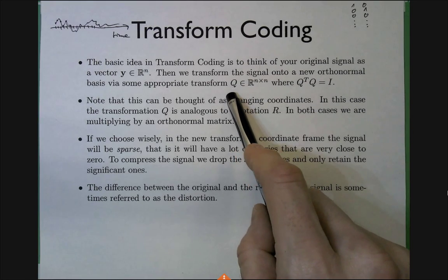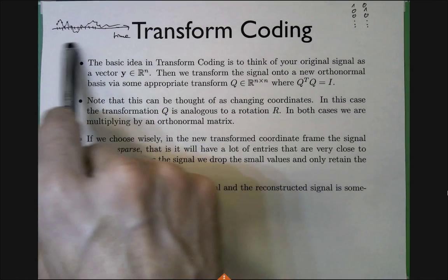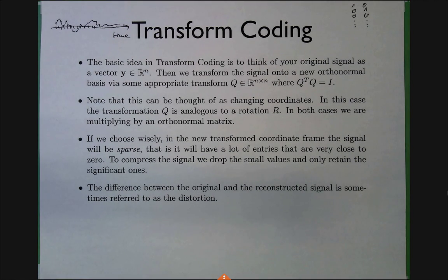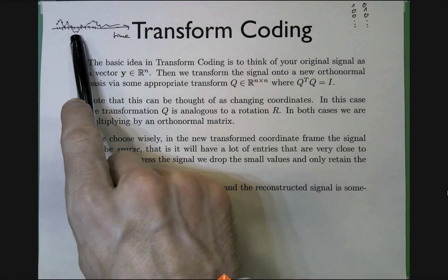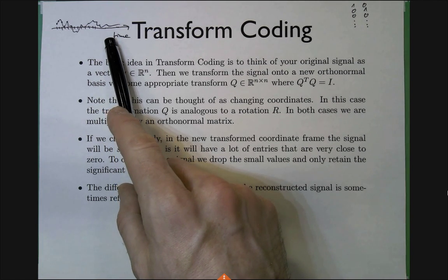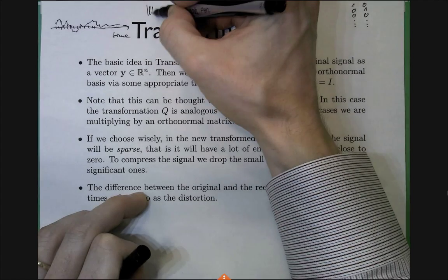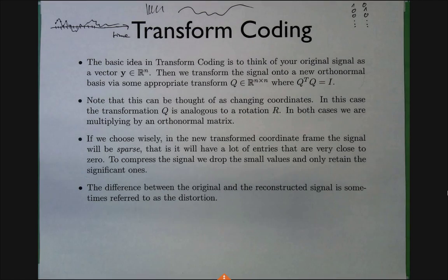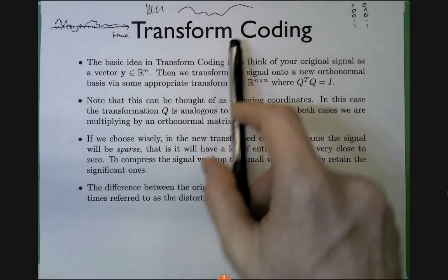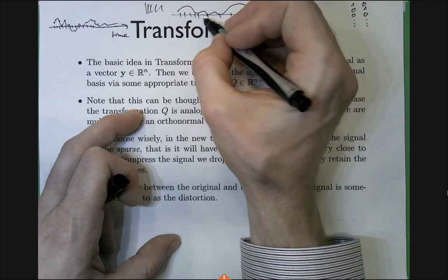The idea of transform coding is how to use the theory of orthogonal matrices to create a really cool lossy compression scheme. If you think about it intuitively: some input signal might be complicated but it's not completely random — something like speech has structure to it. If you keep doubling the sampling rate you have twice as much data, but the actual quality doesn't improve much beyond a certain point.